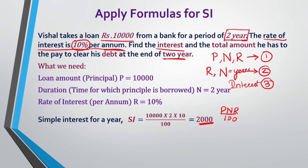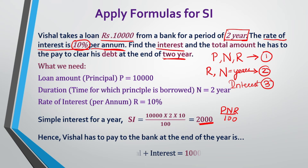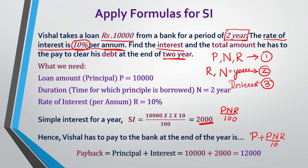After finding the interest, we go back to our question. They have also asked us to find the total amount Vishal has to pay to clear his debt at the end of two years. So we need to find the payback. Payback = principal + interest = P + (P×N×R/100) = 10,000 + 2,000 = Rs 12,000. So Vishal has to pay Rs 12,000.